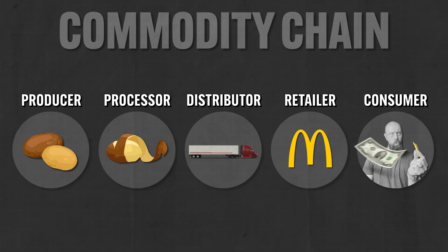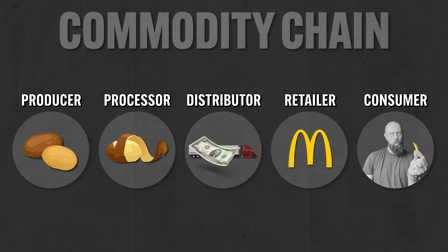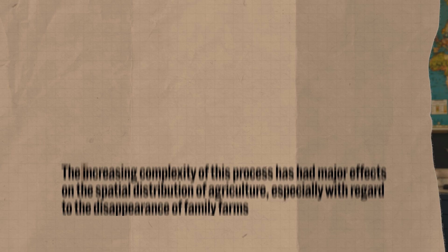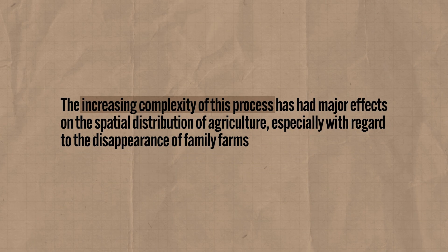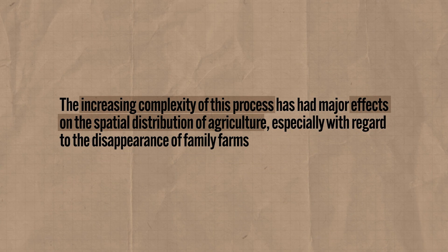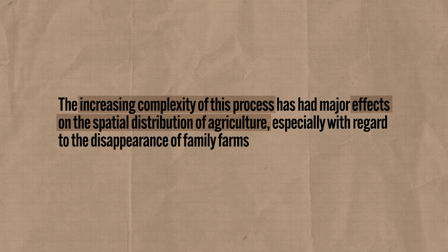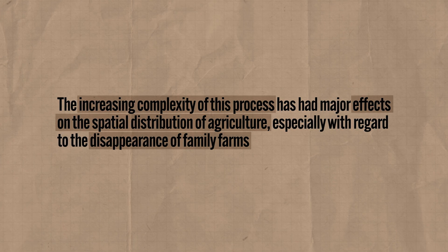The commodity chain works both ways. When you give your $2, it filters back along the chain in the opposite direction, paying the representatives of each stage for the value that they added to the product. This is how it works to feed a large majority of the world's population. But the increasing complexity of this process has major effects on the spatial distribution of agriculture, especially with regard to the disappearance of family farms.